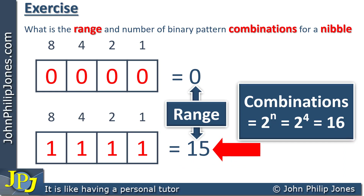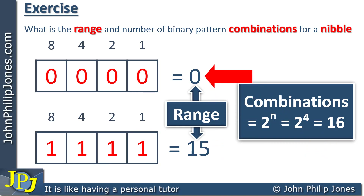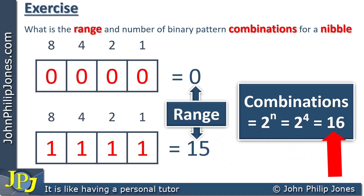The top of the range, 15, is one less than the number of combinations, 16. The reason it's one less is because we start at zero, not one. So from zero to 15 there are 16 different combinations. We will always find that the range is one less than the number of combinations.